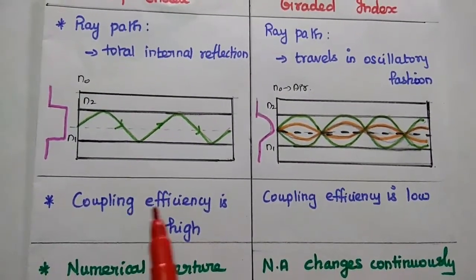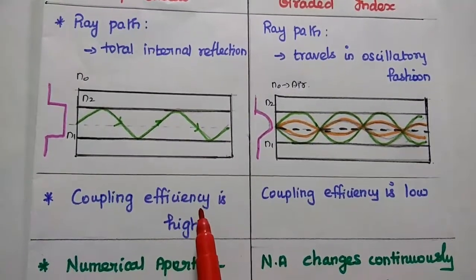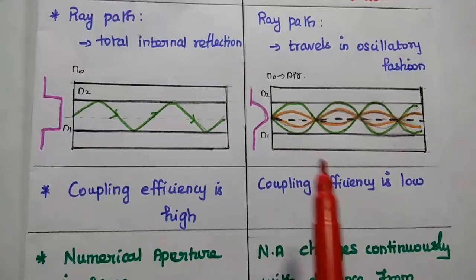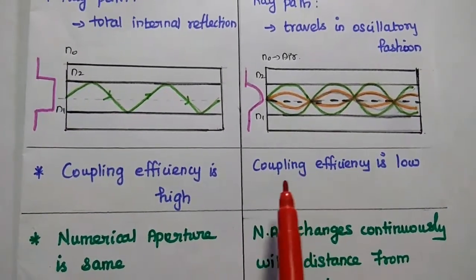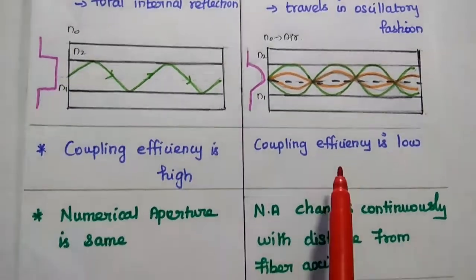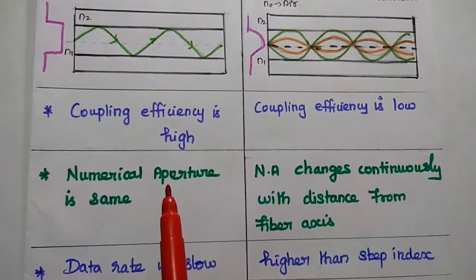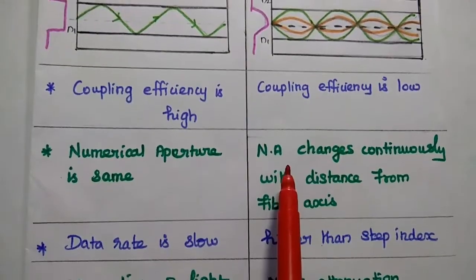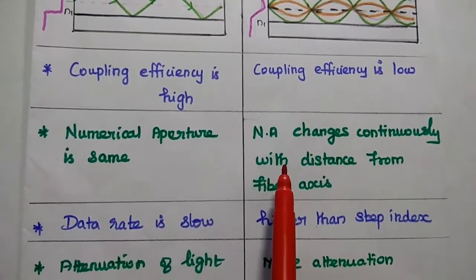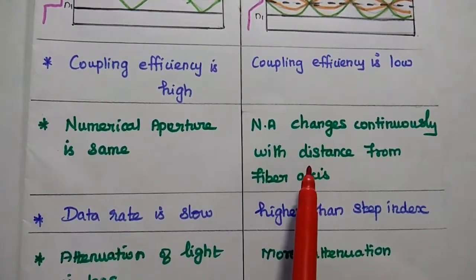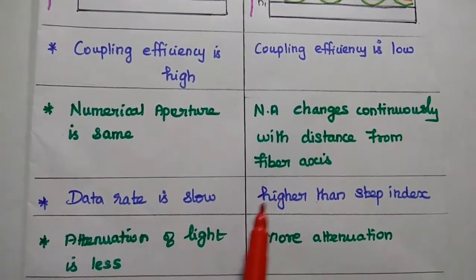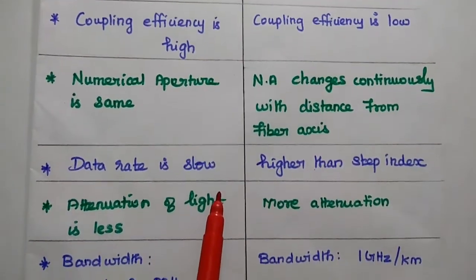Next, the coupling efficiency of the step index is very high due to this single path. But in this graded index, the coupling efficiency is low. The numerical aperture value remains same in this step index. But in this graded index, the numerical aperture value changes continuously with distance from fiber axis due to multiple paths.